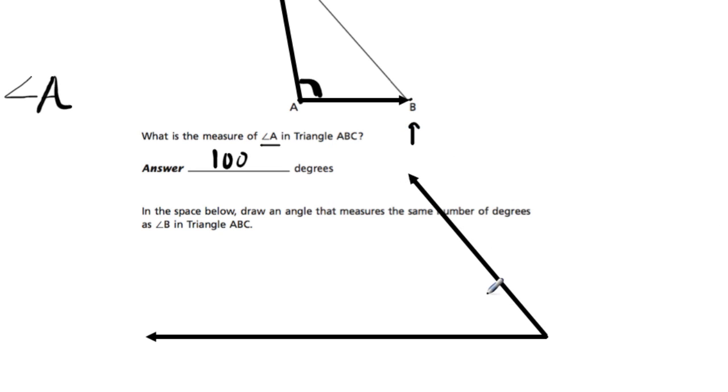So now, the last step is just to label it. Draw an arc and write 50 degrees on the inside and you're done. All right, thanks a lot.